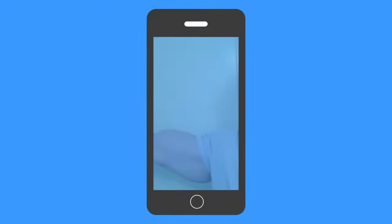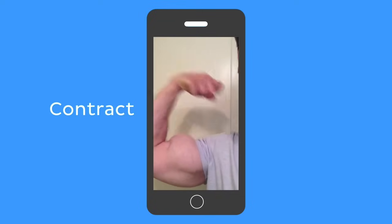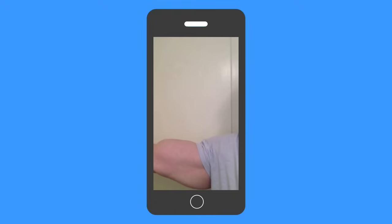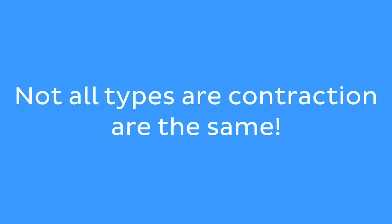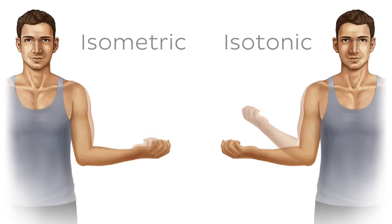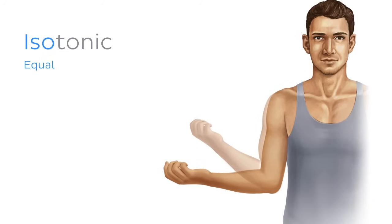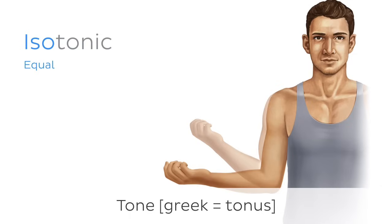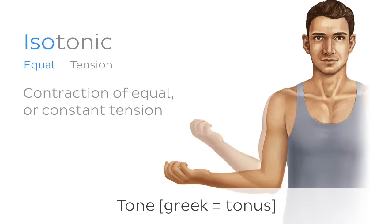Regardless of the type or location of a muscle, they all have the exact same function: contract and relax. However, not all types of contraction are the same. There are two main types of muscle contraction — isotonic and isometric — and they both begin with the prefix iso, which means equal or constant. The most familiar type is isotonic contraction, where the root tonic comes from the Greek tonus, meaning tone or tension, so it means contraction of equal or constant tension.